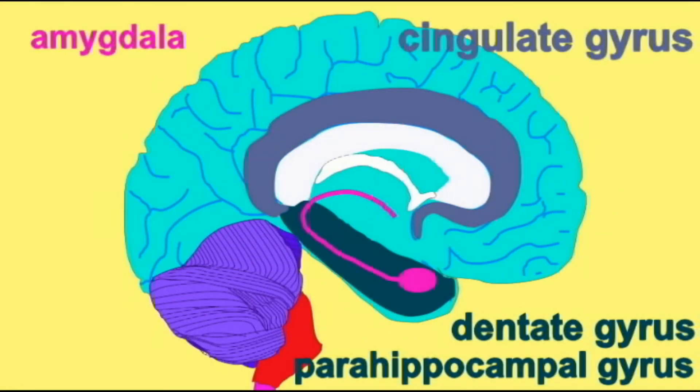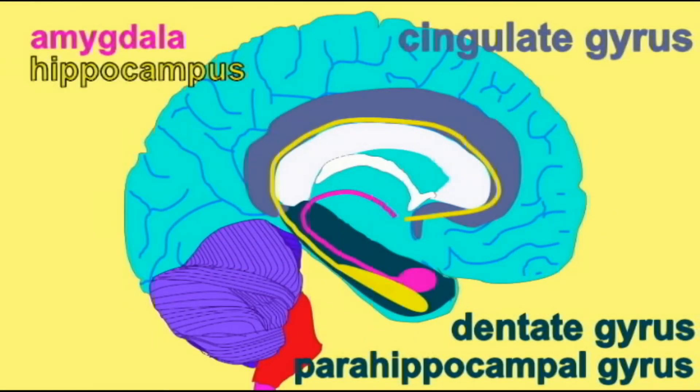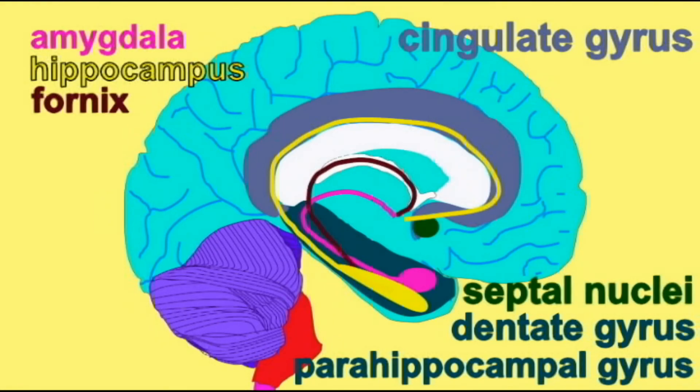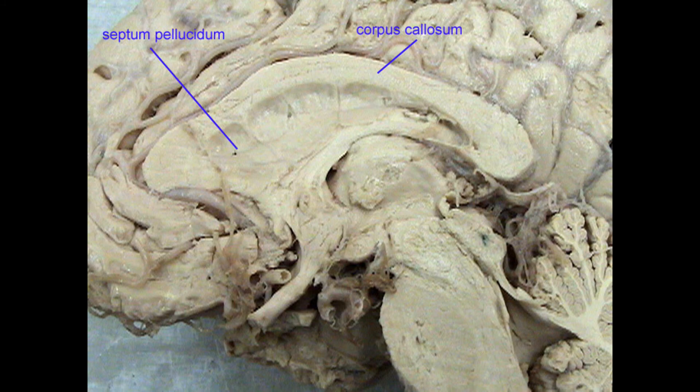The septal region is connected to many important parts of the brain, such as the hypothalamus, the tegmentum of the midbrain, and the hippocampus.